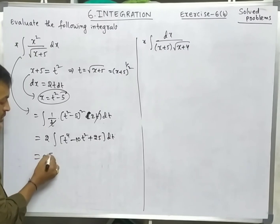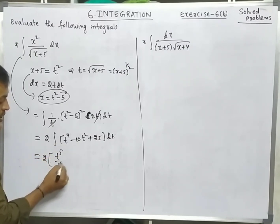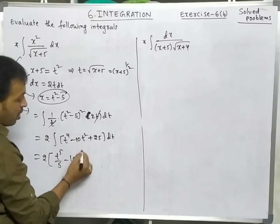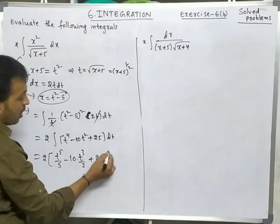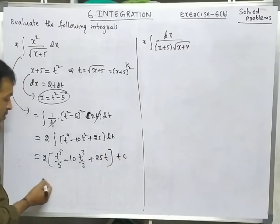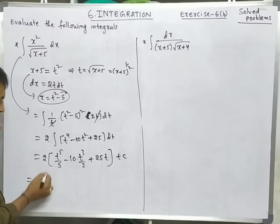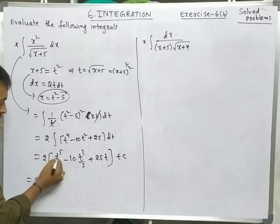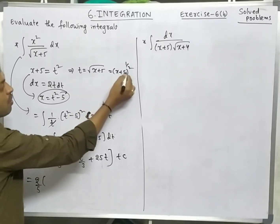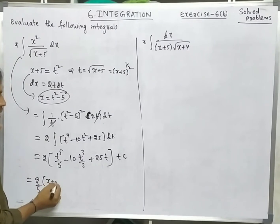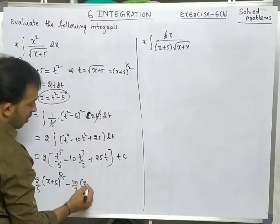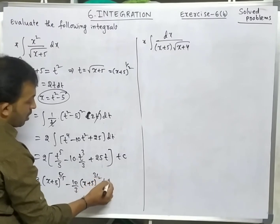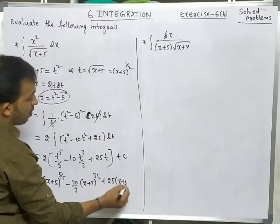Integrating: 2·[t⁵/5 - 10t³/3 + 25t] + c. Now substitute t = √(x+5): the answer is (2/5)(x+5)^(5/2) - (10/3)(x+5)^(3/2) + 25(x+5)^(1/2) + c. Multiply 2 inside for the final answer.